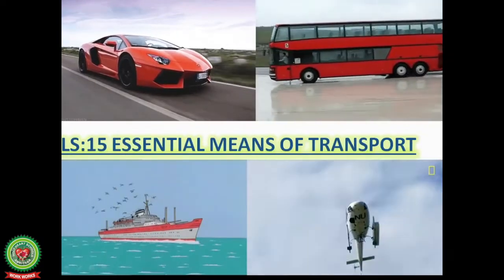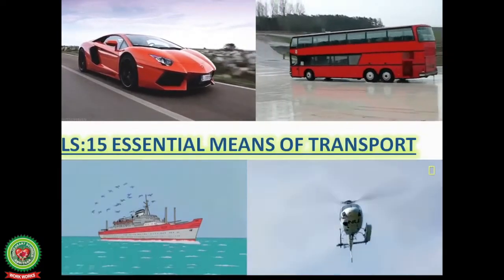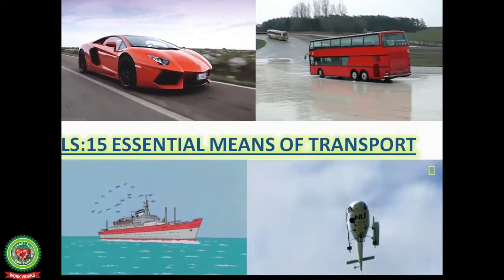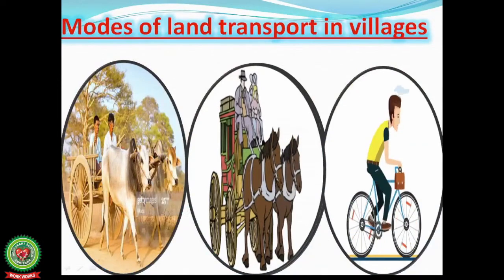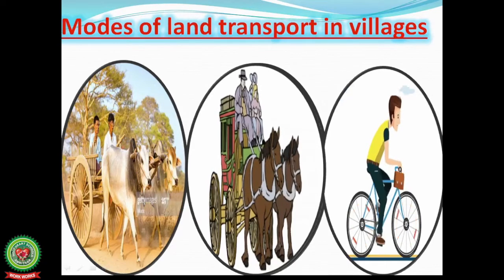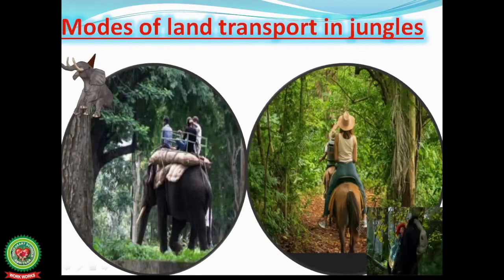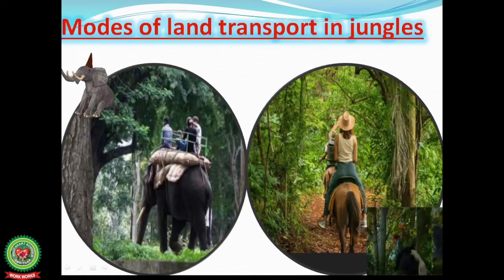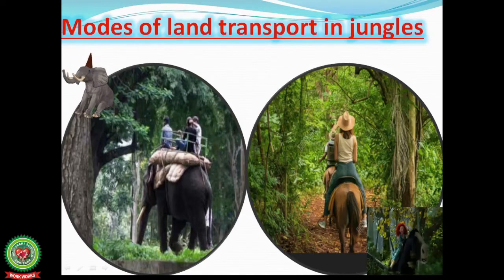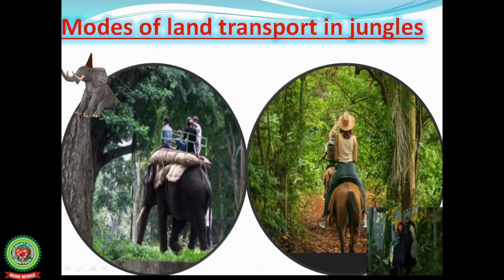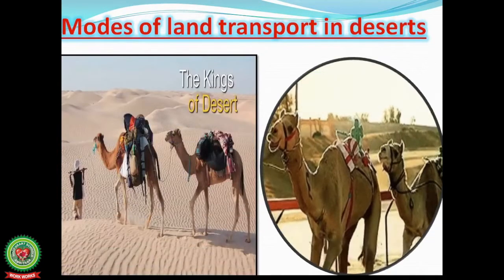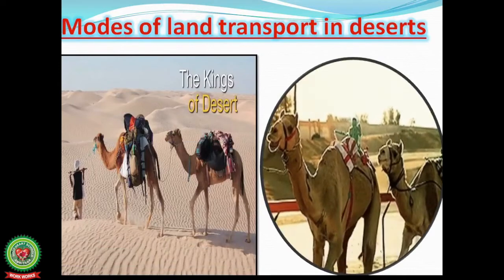Transport means to travel from one place to another. Land transport is transport that moves on land. Modes of land transport in villages are bullock cart, tonga, and cycle. Modes of land transport in jungles are elephants and horses. Modes of land transport in deserts are camels.